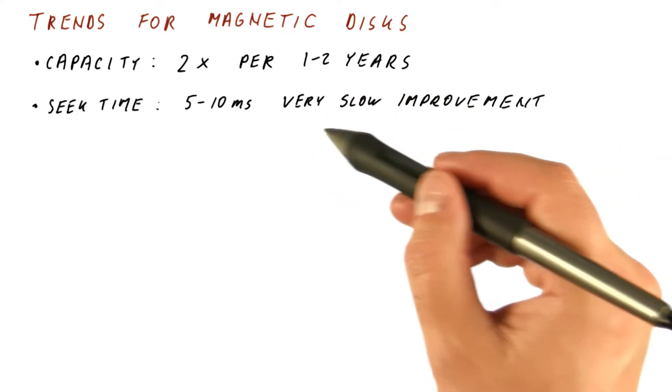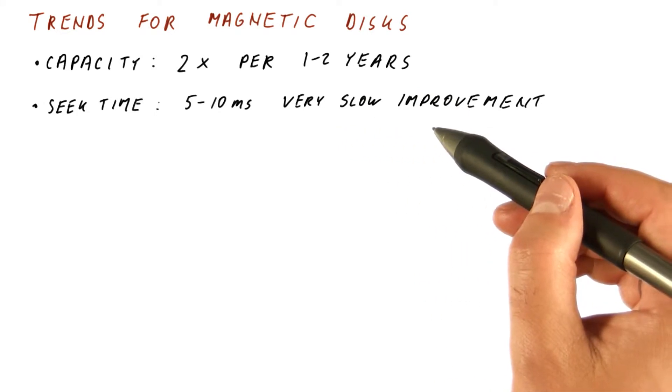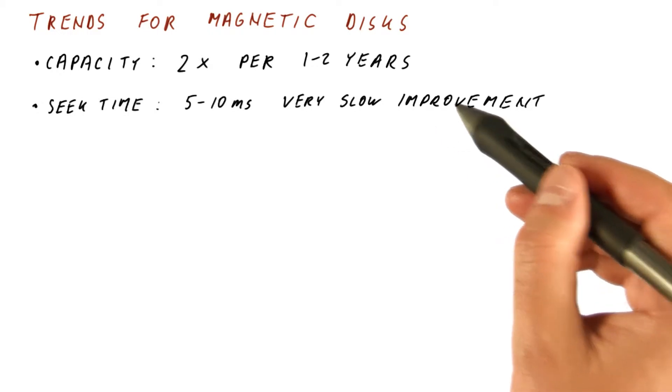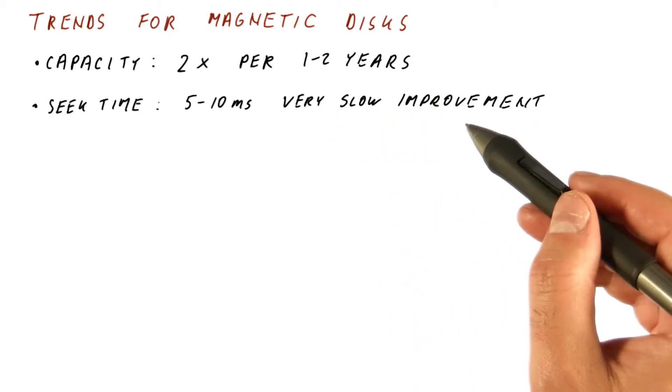So there has been some recent improvement in that we have gone from five inch diameter disks to three and a half, to more recently two and a half, and even smaller. So there has been some improvement in seek time, mainly because the disks have shrunk.